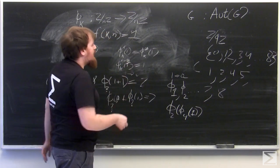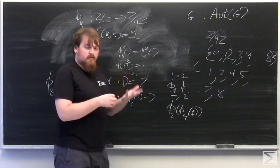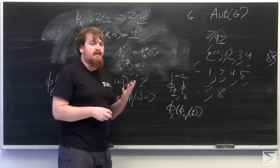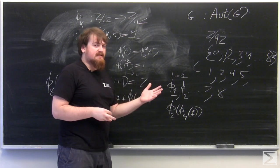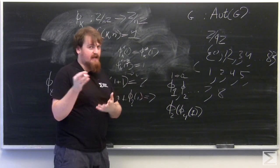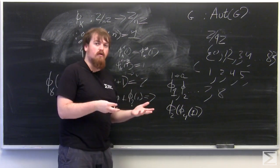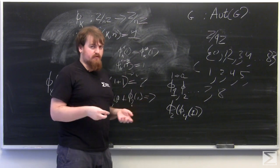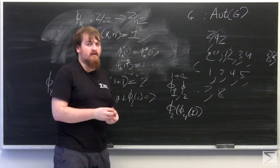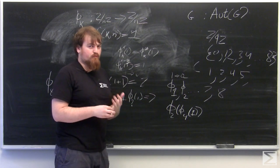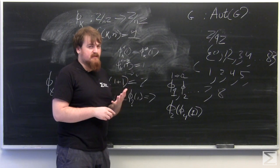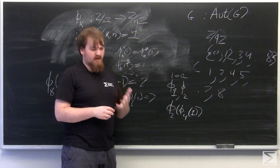However, if it's not coprime, if we look at Z mod 9Z for example, multiplication by 3 is not invertible. 3 gets sent to 0 when you multiply by 3, because 9 is identified with 0. But 0 is also identified with 0, and so will 6 be sent there. So multiplication by 3 is not invertible, and that's because 3 is not coprime with 9.